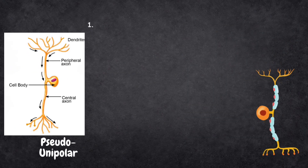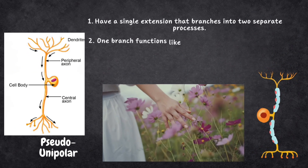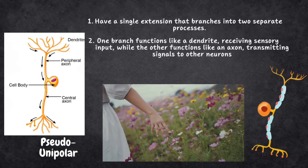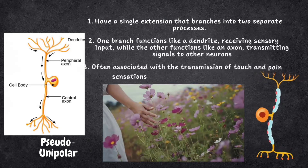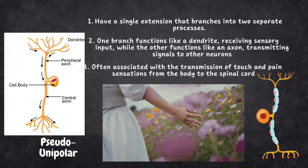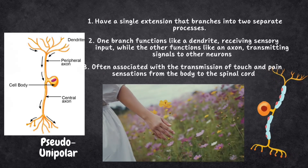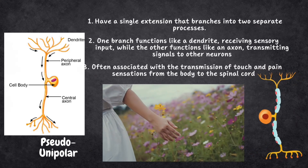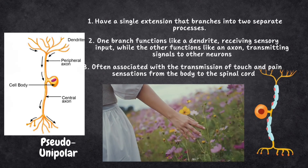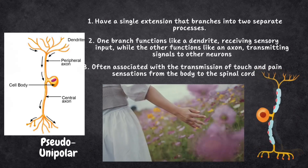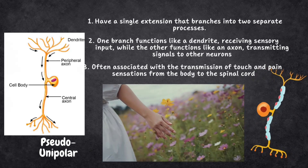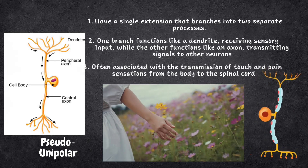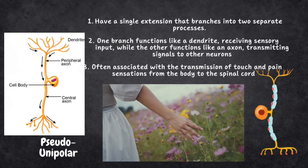Unipolar neurons, also known as pseudo-unipolar neurons, have a single extension that branches into two separate processes. One branch functions like a dendrite, receiving sensory input, while the other functions like an axon, transmitting signals to other neurons. Unipolar neurons are often associated with the transmission of touch and pain sensations from the body to the spinal cord. They receive sensory information from various parts of the body — such as touch, temperature and pain — and send them to the CNS for processing.